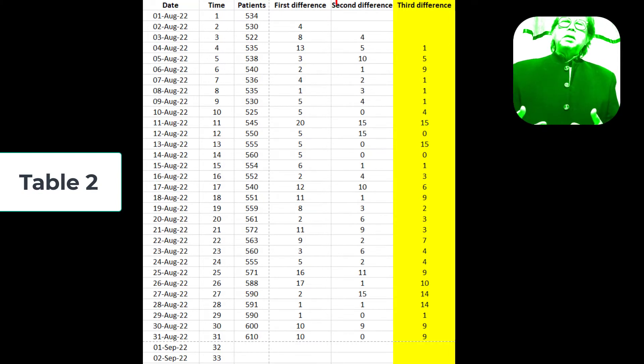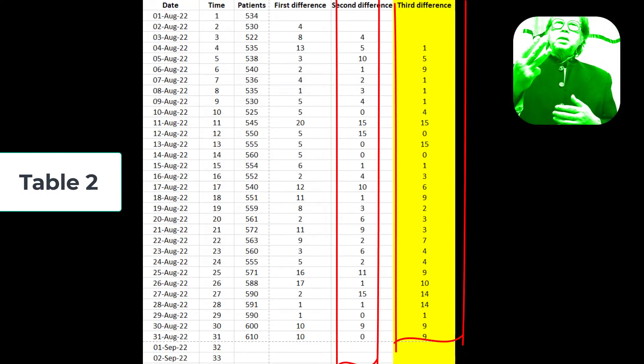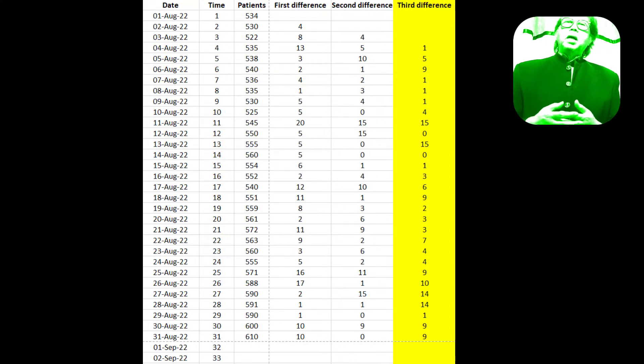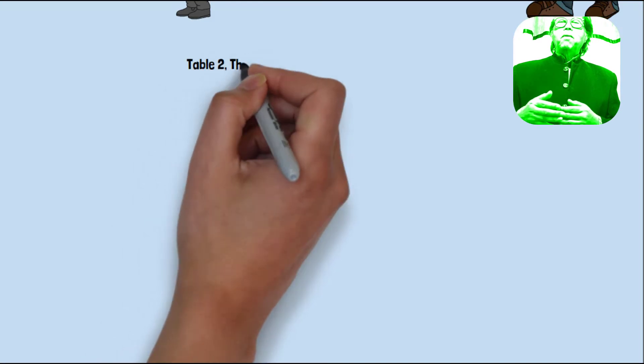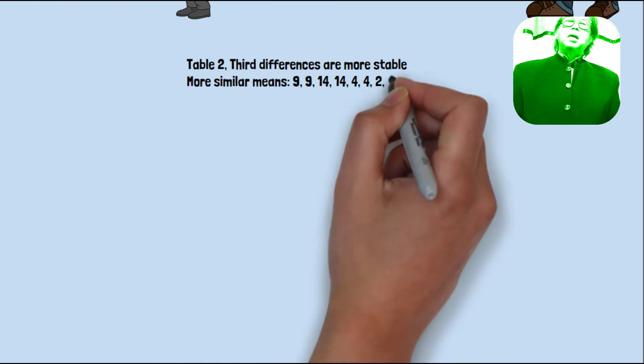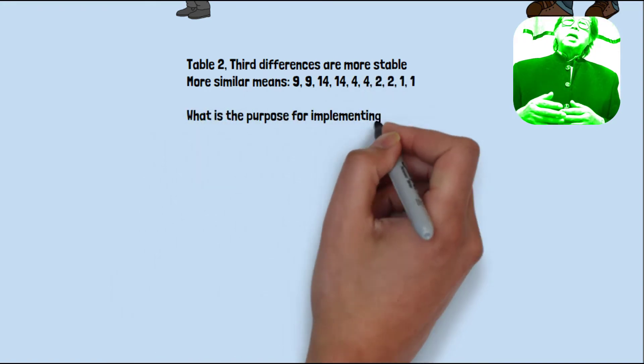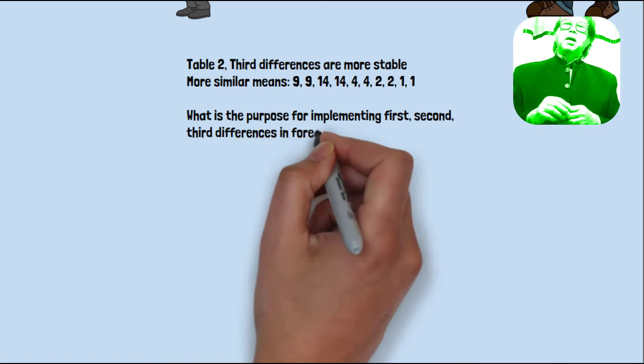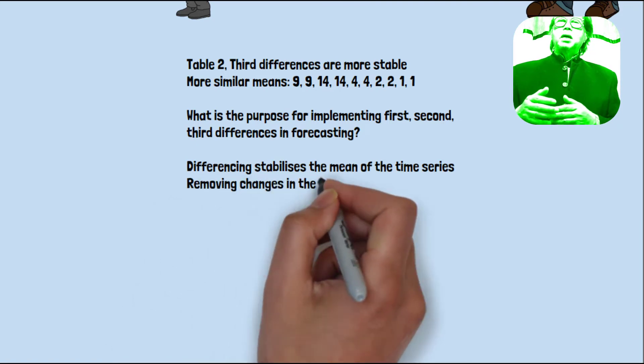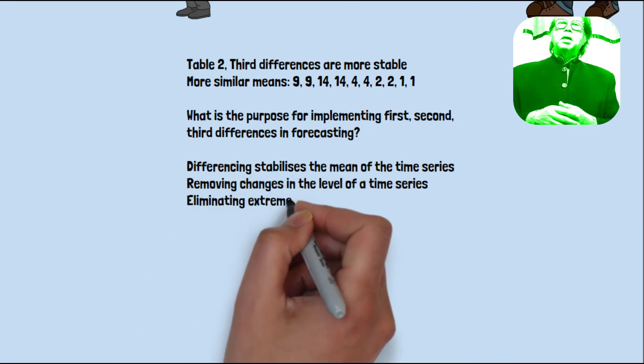So you can do also second differences and third differences to get more stable data. More stable because the means are more similar. For example, 9, 9, 14, 14, 2, 2, and 1, 1. So you have to test first with first difference. If not stable, you need to go to the second difference. By removing changings in the level of time series, the actual level, and to eliminate trend and seasonality. This is the purpose of the trending: first difference, second difference or third difference.